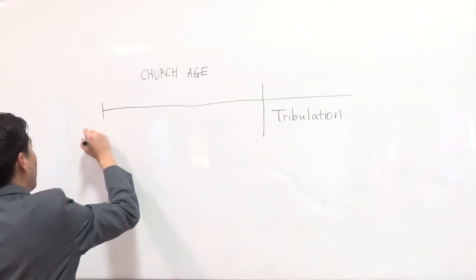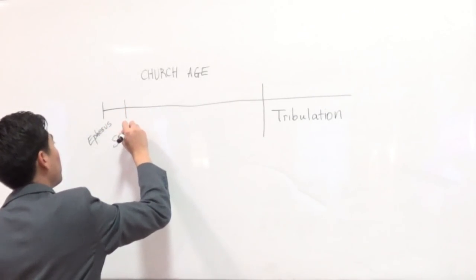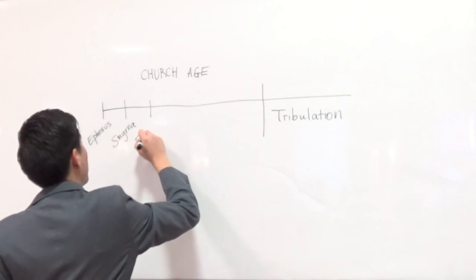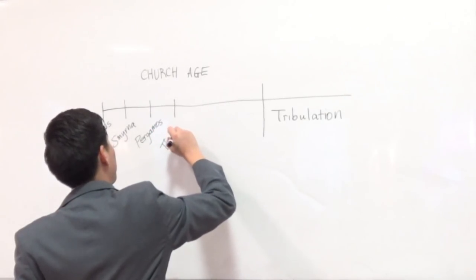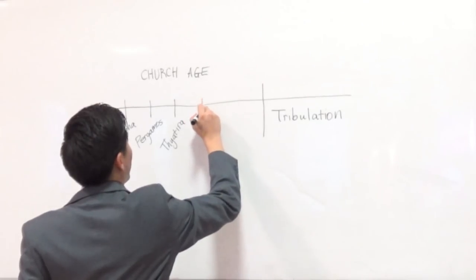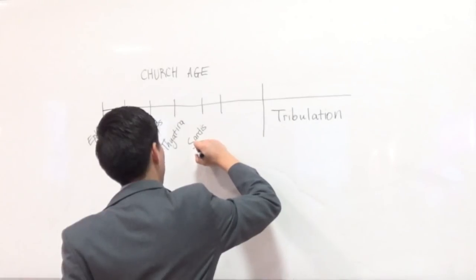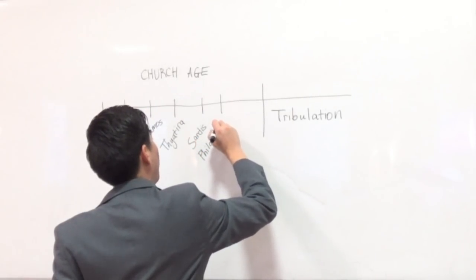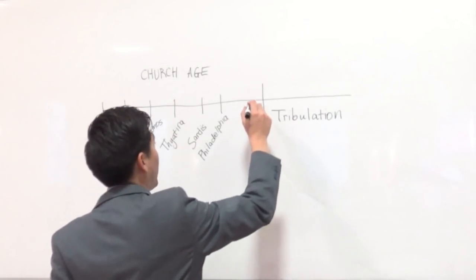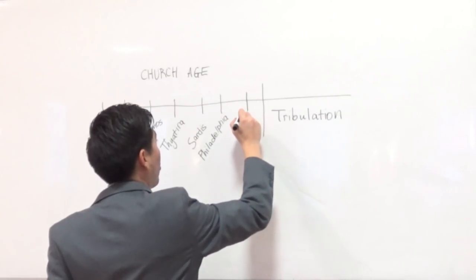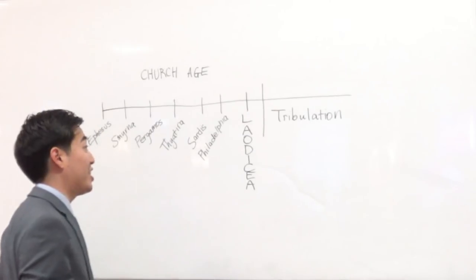The first one is Ephesus. Over here is Smyrna. Over here is Pergamos. Over here is Thyatira. Over here is Sardis. Over here is Philadelphia. And Philadelphia covered the centuries of either 1500 to 1900 or from 1700 to 1900, the Great Awakening Revival. Lastly, we are right here, which is the crowning age of apostasy, Laodicea.